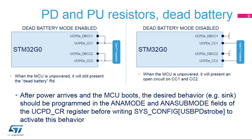When the UCPD is used as an upstream facing port, the dead battery feature enables the UCPD to indicate to the peer node that it needs to be powered. This analog setting is functional even when the MCU power supply is switched off. This default behavior is configured by connecting the DBCC pins to the respective CC pins. After power arrives and the STM32G0 boots, the desired behavior should be programmed in the ANA mode and ANA sub-mode fields of the UCPD_CR register, and then the USB-PD strobe bit must be set to 1 in SysConfig. Connecting DBCC pins to ground disables dead battery mode; the peer DFP is then unable to distinguish a dead battery state from an unattached state.